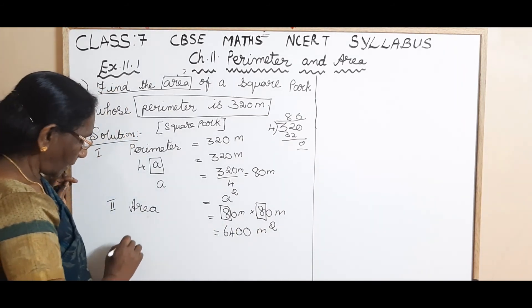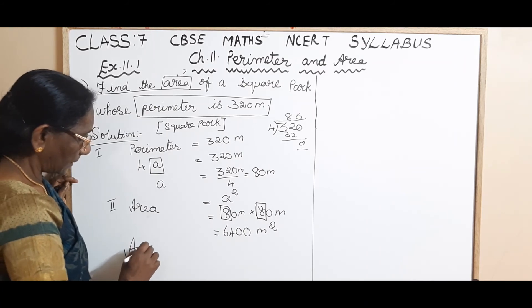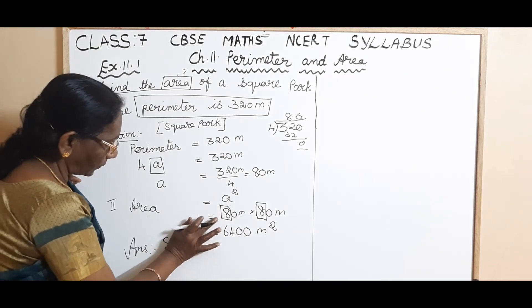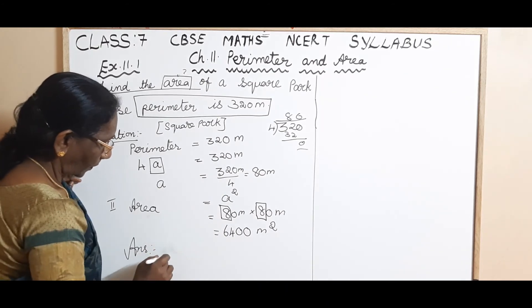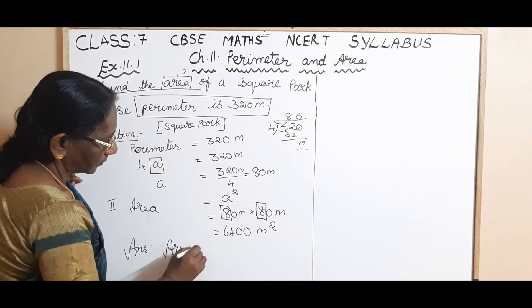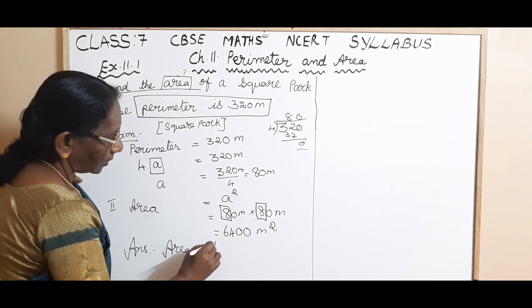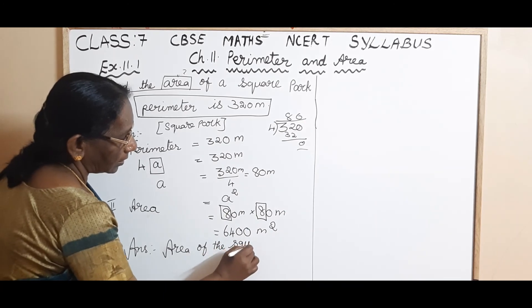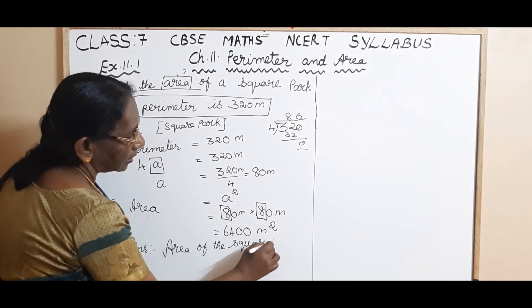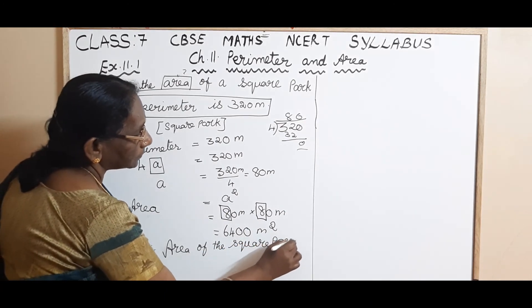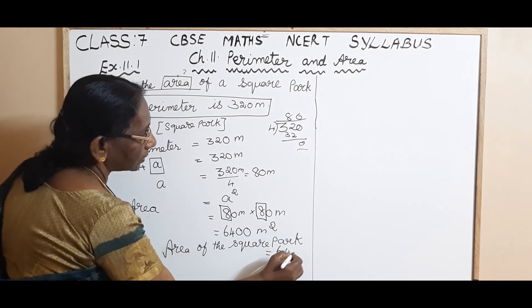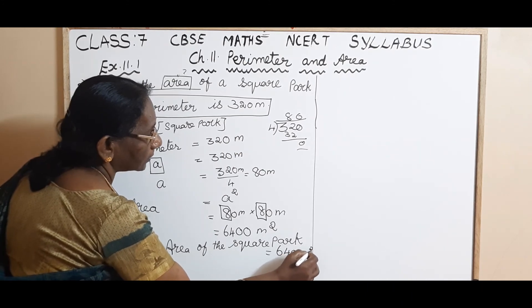Okay. So what is the answer? Square. Area of the square park is equal to 6400 meter square.